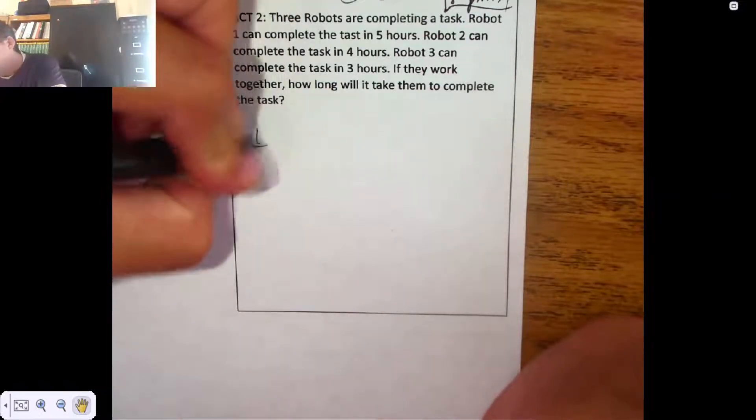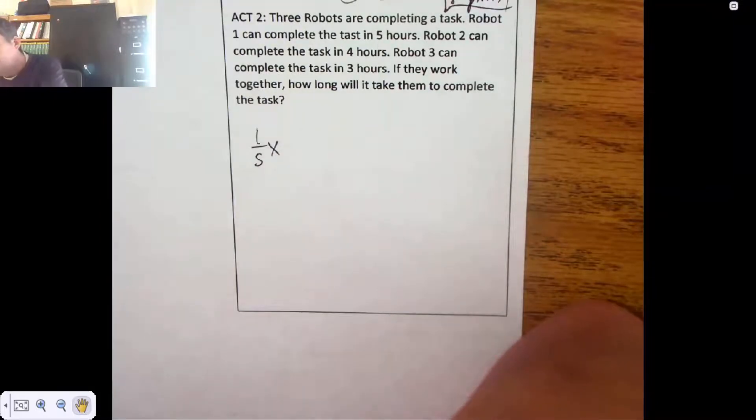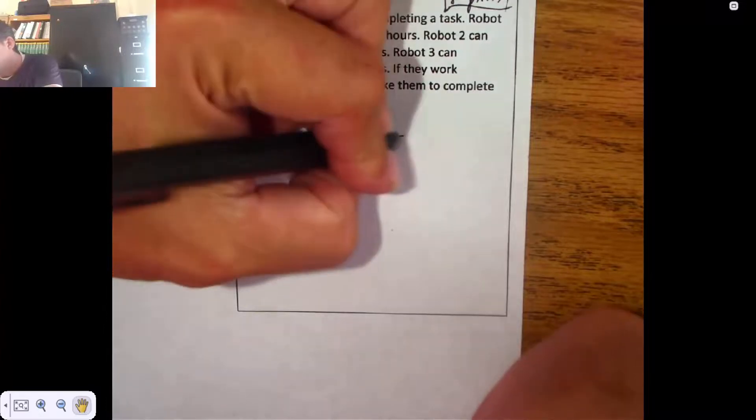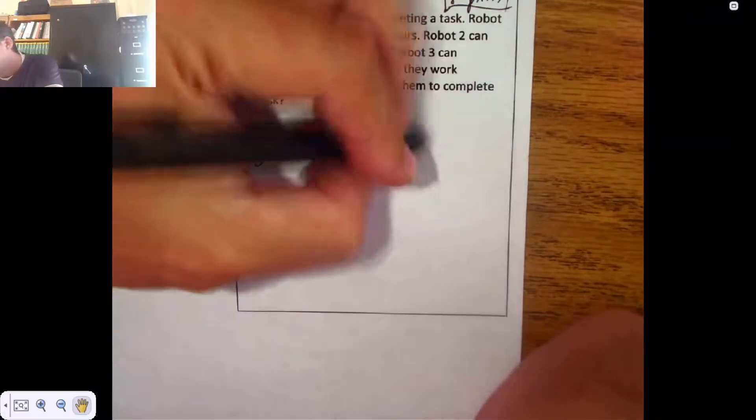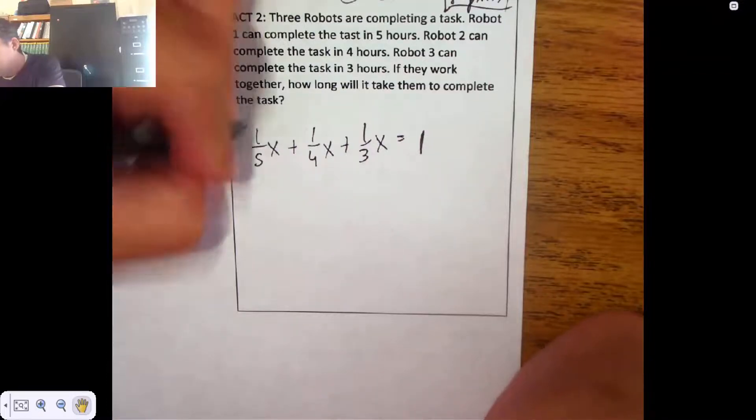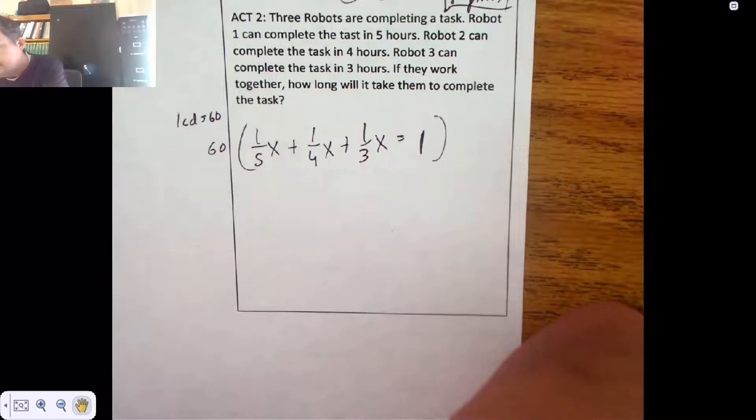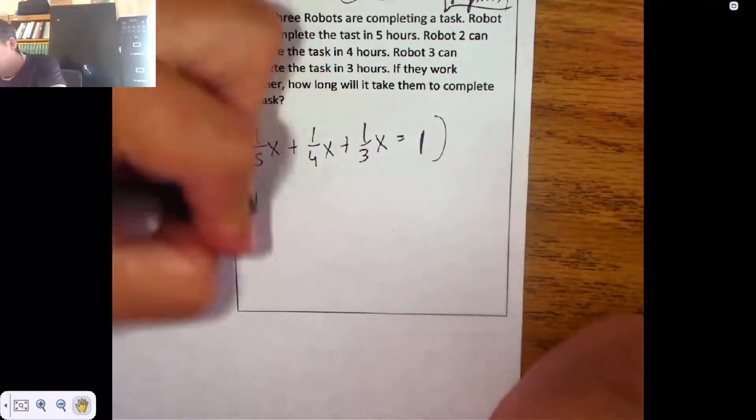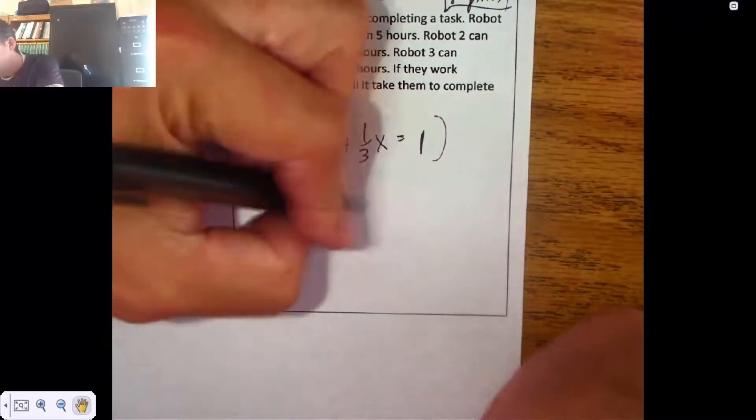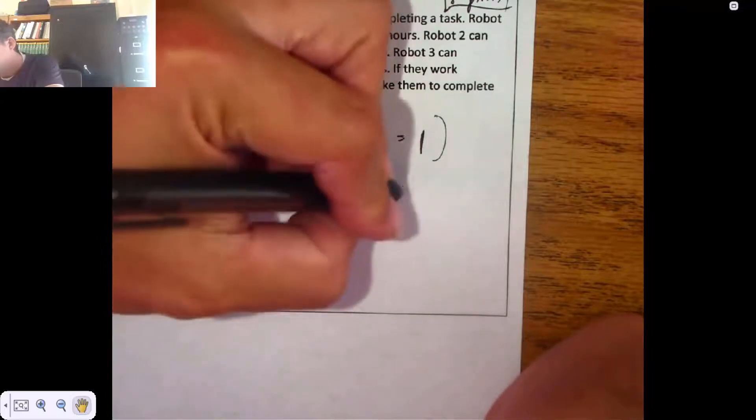So robot one can do a fifth of the job in an hour. We're going to add to that robot two who can do a fourth of the job in an hour. We're going to add to that robot three who can do a third of a job in an hour. And together, the sums of their work, the sums of their labor, is the complete job one. So looking at this one, the LCD, the least common denominator, is 60. I'm going to multiply everything by 60 because it will make my fractions disappear. 60 over five is 12. 60 over four is 15. 60 over three is 20. And 60 times one is 60.